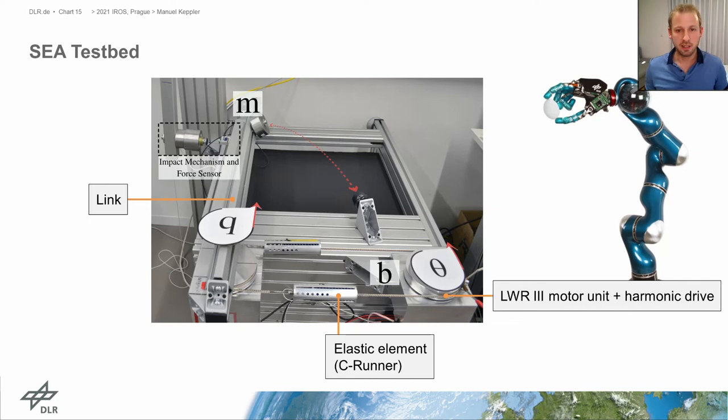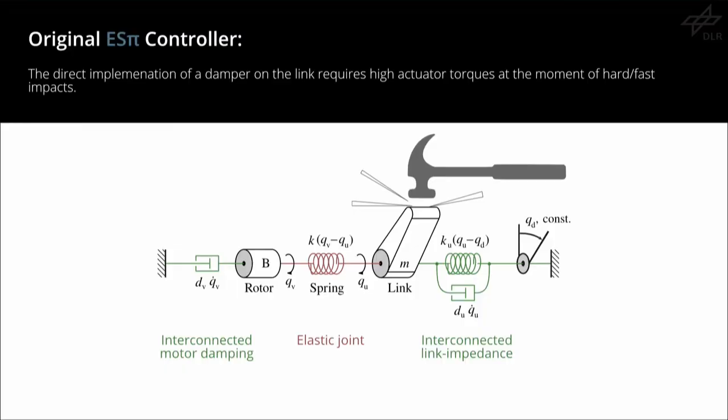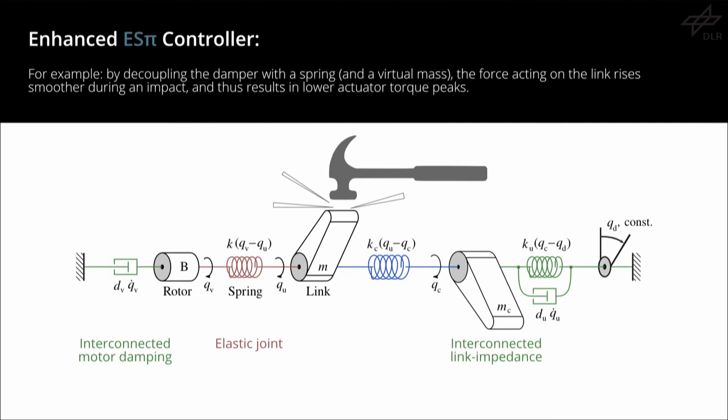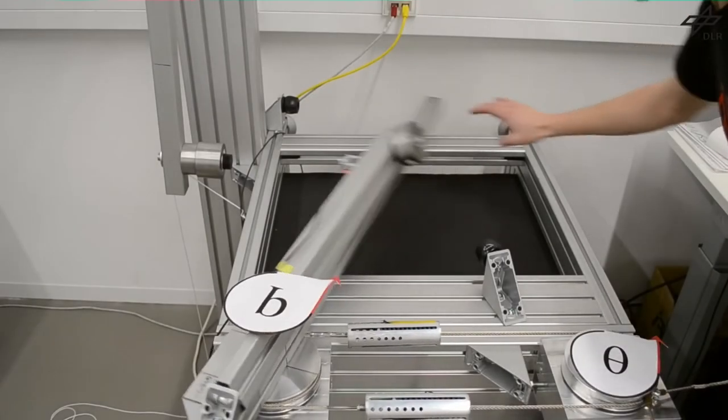In our work, the enhanced damping designs have been experimentally evaluated on a dedicated SEA testbed that is implemented with an LWR3 motor unit and an elastic element from the DLR robot CRUNCH. The following experiments compare two implementations. In the first scenario, the robot links are interconnected with the classic PD element. And in the second scenario, the robot links are interconnected with the dynamic extension, as shown here. For a single joint, the resulting closed loop behavior looks like this for the first scenario. And for the second scenario, the closed loop behavior with the dynamic extension is as shown here.